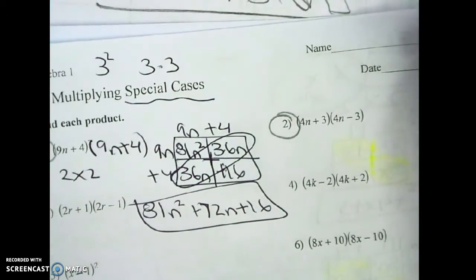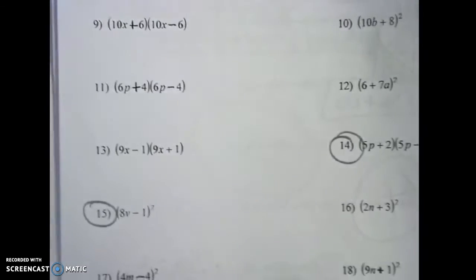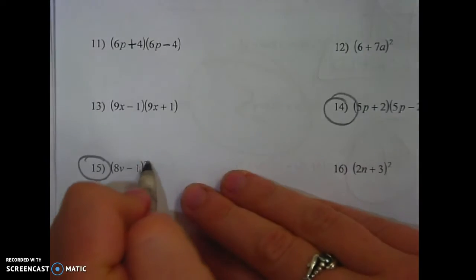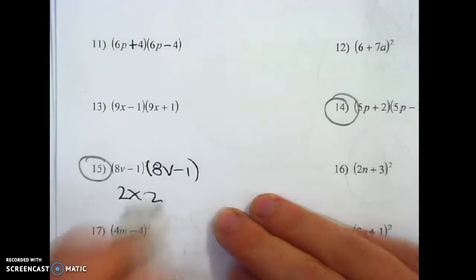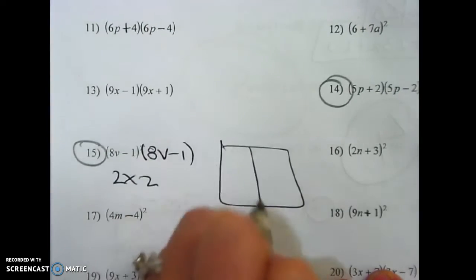Let's jump down to number 15 as an example. So if you look at number 15, it says squared. What does it mean? You write it again. And you see the dimension is 2 by 2. You do your box.